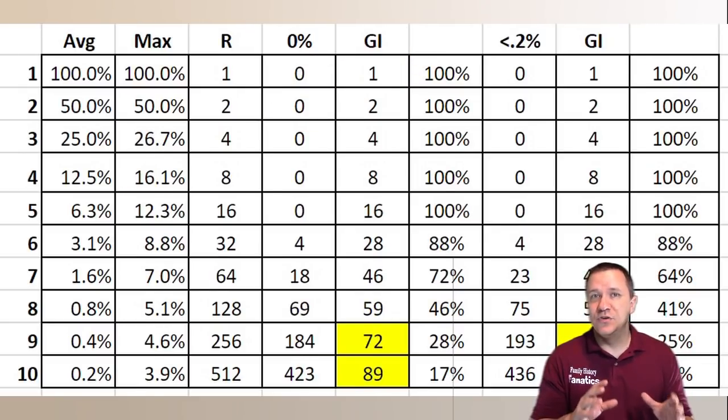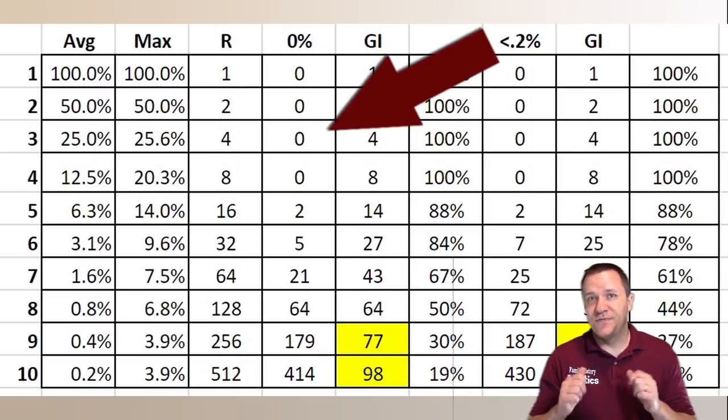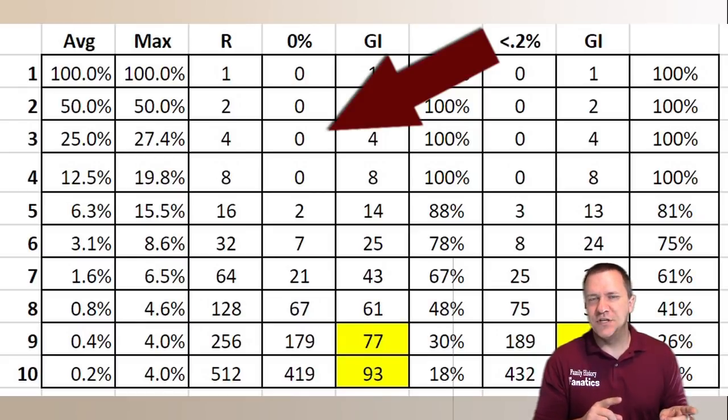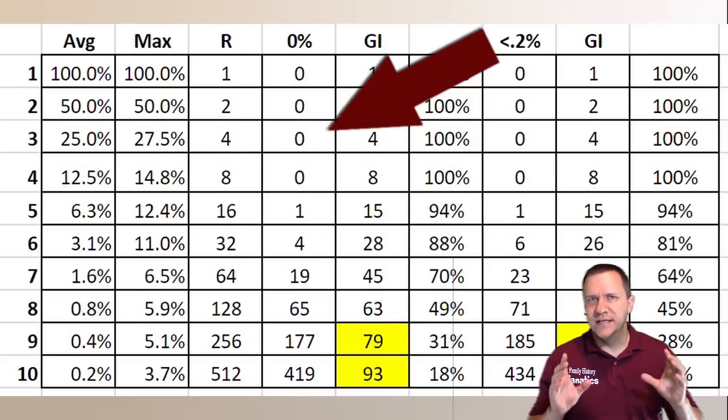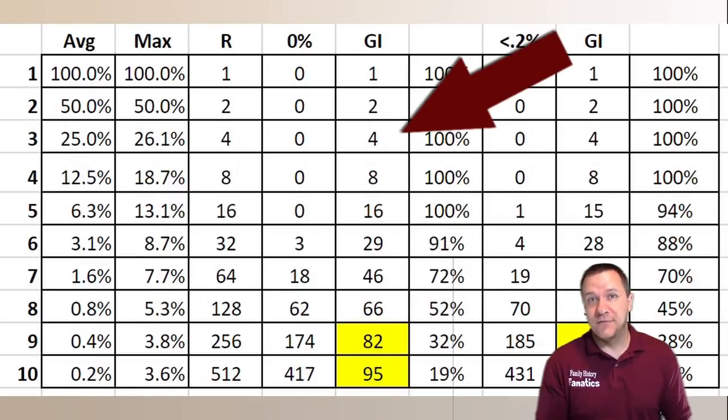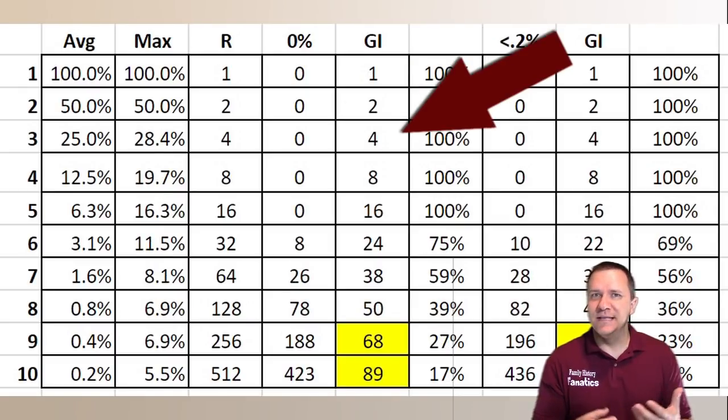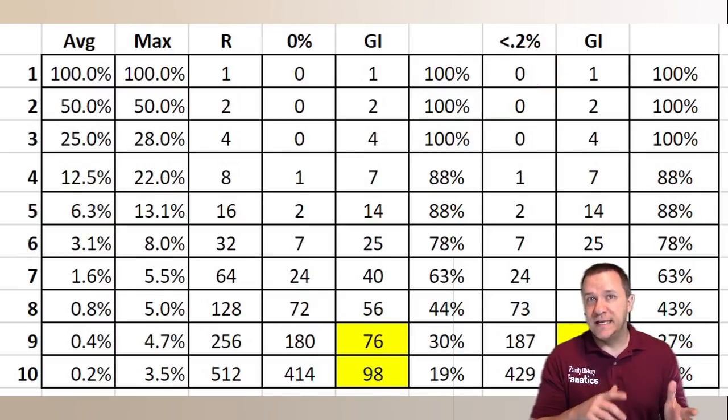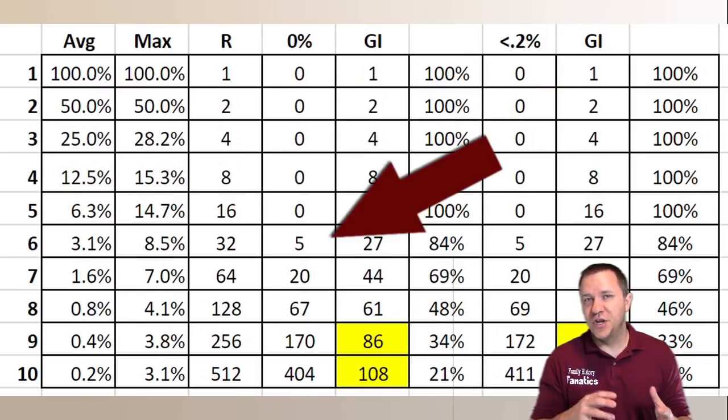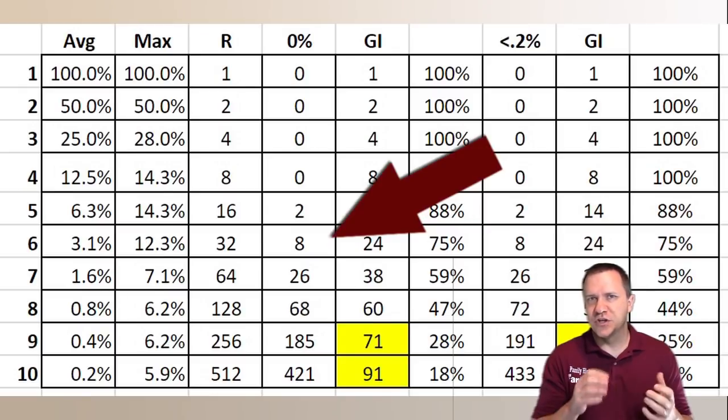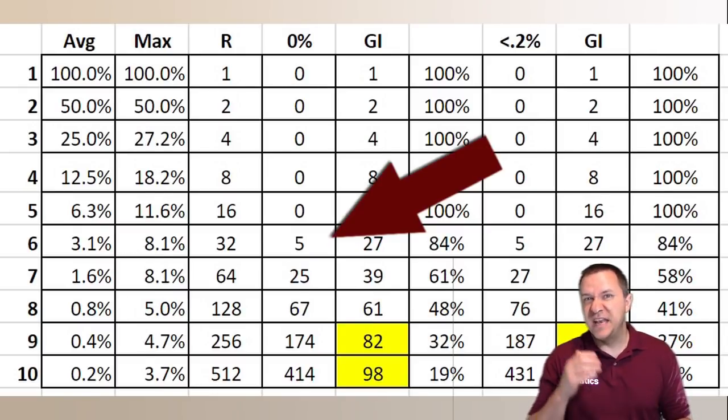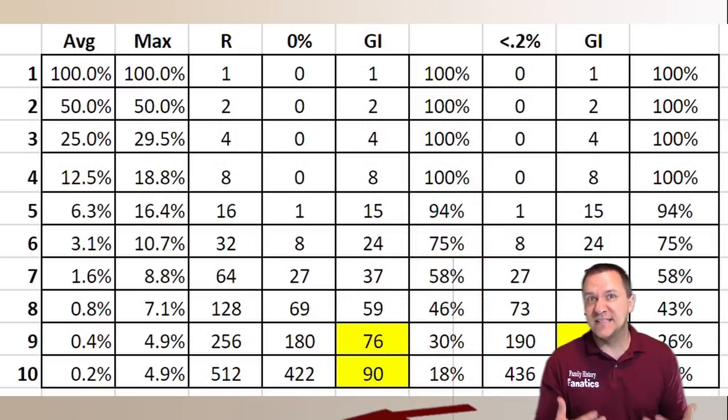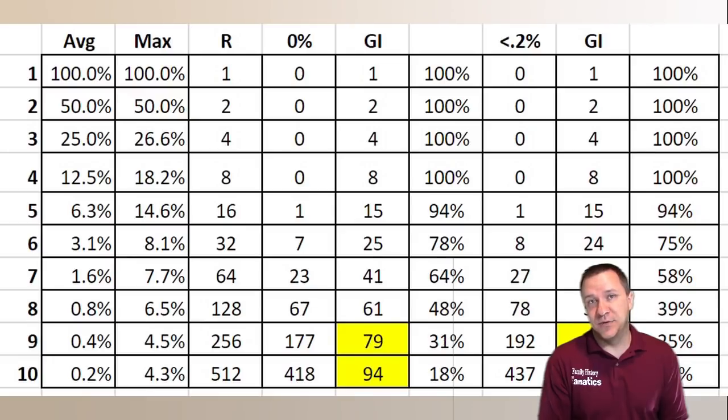Now we get into the interesting part. This fourth column is the number of those ancestors in that generation that you share zero DNA with. And of course then the next column is the number that you share some DNA with. You can see that once you get to the fifth generation the number of ancestors starts dropping off. And as you go up that decrease in percentage actually increases because we're related to less and less of our ancestors in those generations.